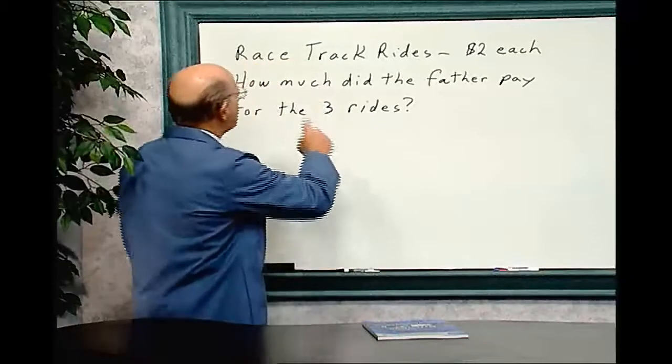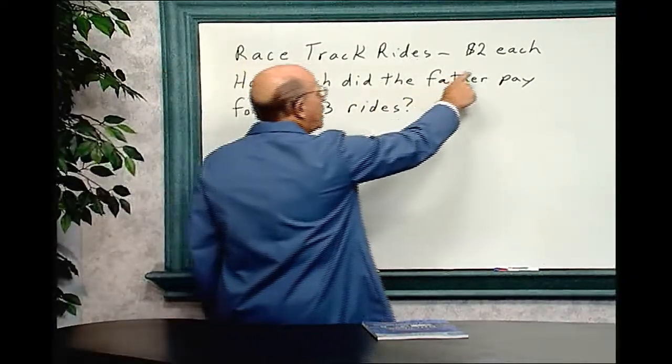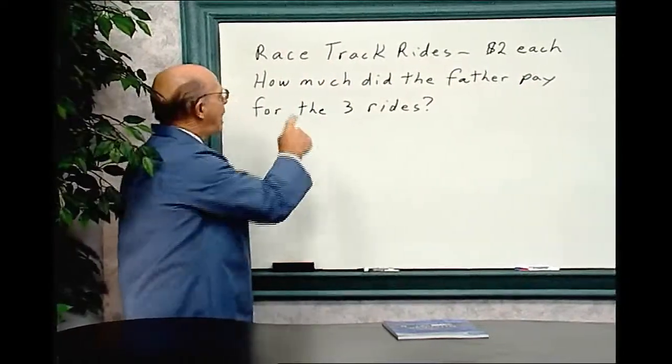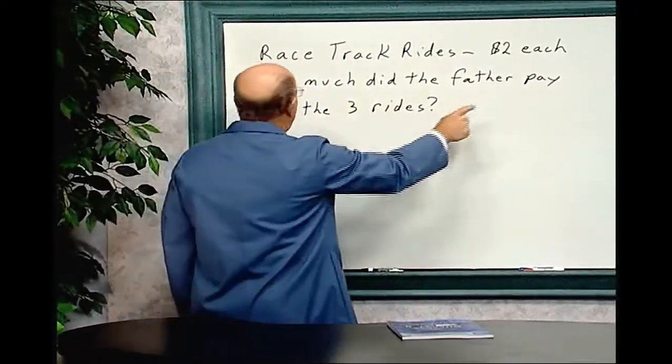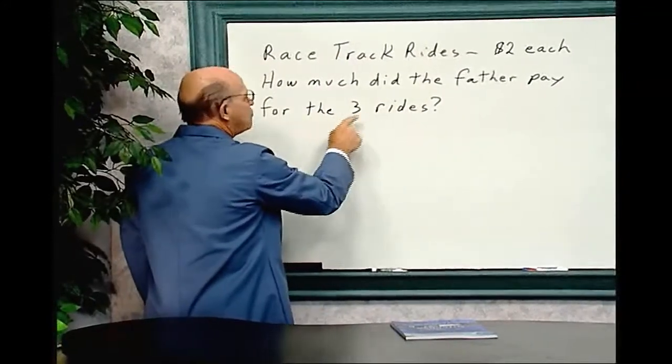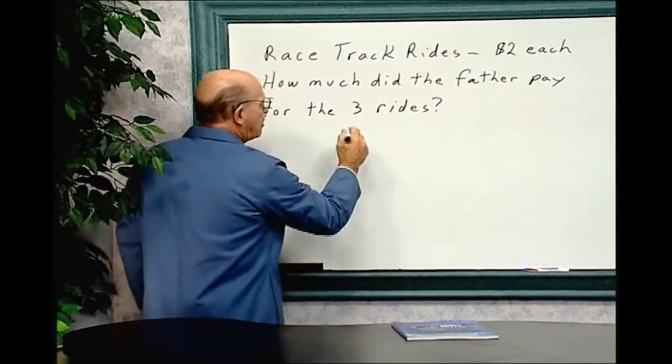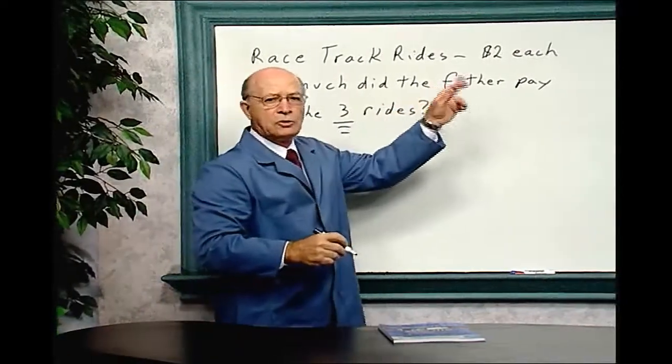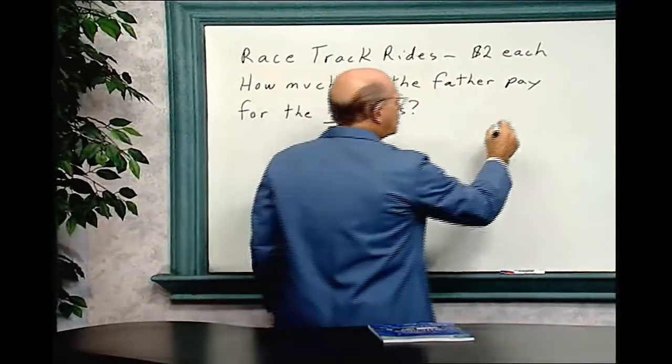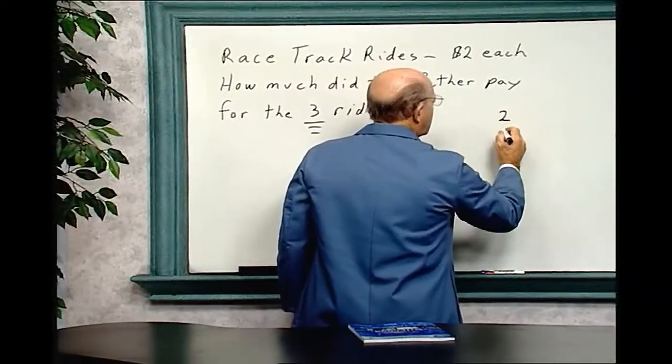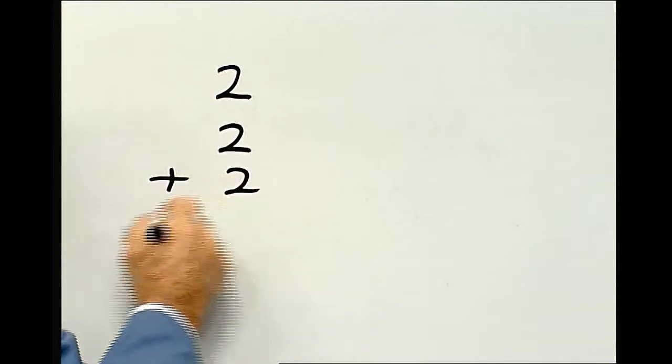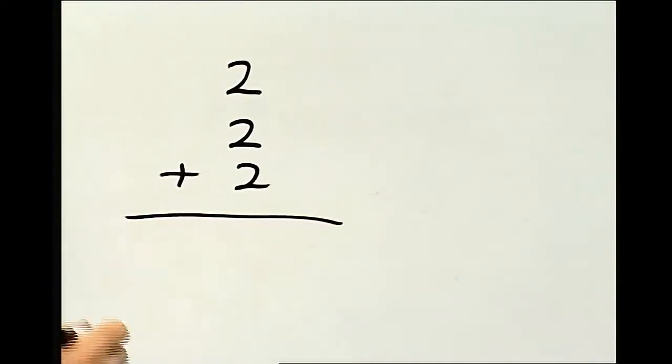The racetrack rides cost two dollars each. And the question is, how much did the father pay for the three rides? Now remember, there's three rides, and each ride costs two dollars each. So it's two plus two plus two. So we've got to add the three twos together.